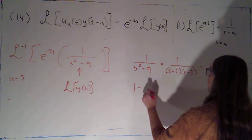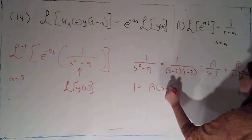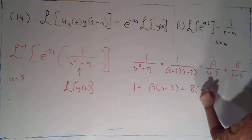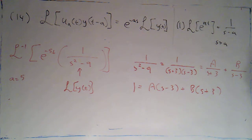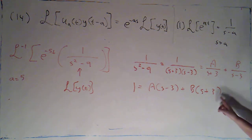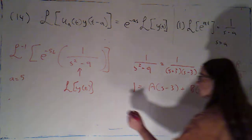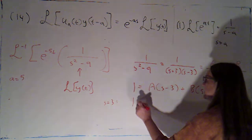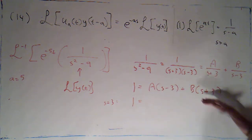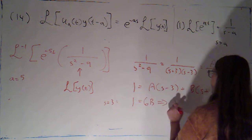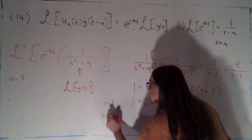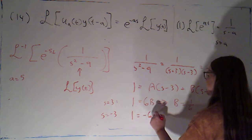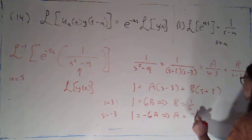When I do that, I get 1 equals A times (s minus 3), because the s plus 3 will cancel, plus B times (s plus 3), because the s minus 3 will cancel. With linear factors, the simplest way to solve for the constants is to plug in nice numbers. If s equals 3, that kills off the A's, giving 1 equals 6B, so B equals 1/6. If s equals negative 3, that kills off the B's, giving 1 equals negative 6A, so A equals negative 1/6.